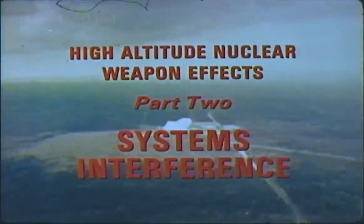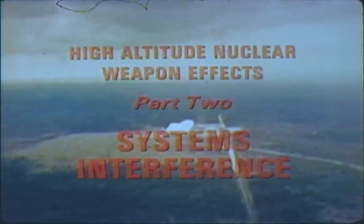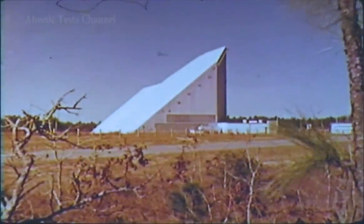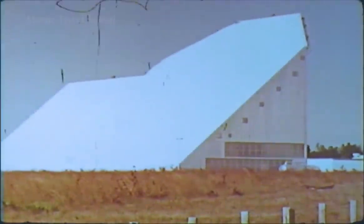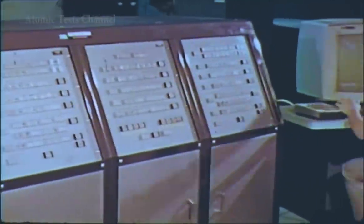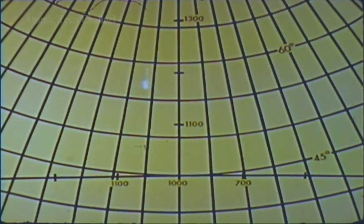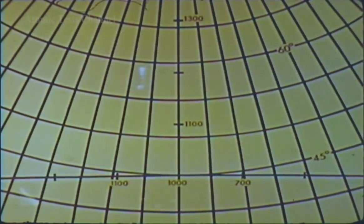The purpose of this film is to describe some of the nuclear weapon effects on military systems and the research being conducted to determine and predict these effects. An example of a ballistic missile attack will be used to illustrate how different nuclear detonations affect radar systems.